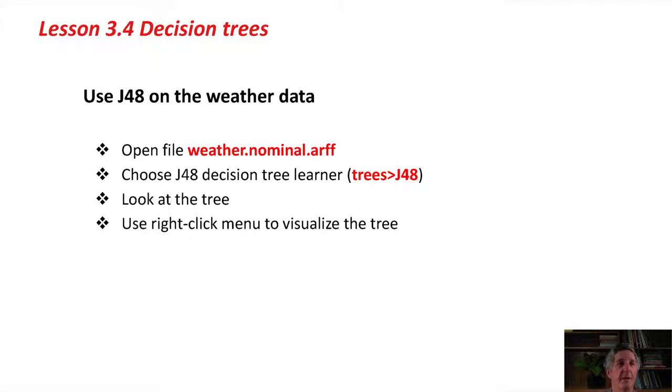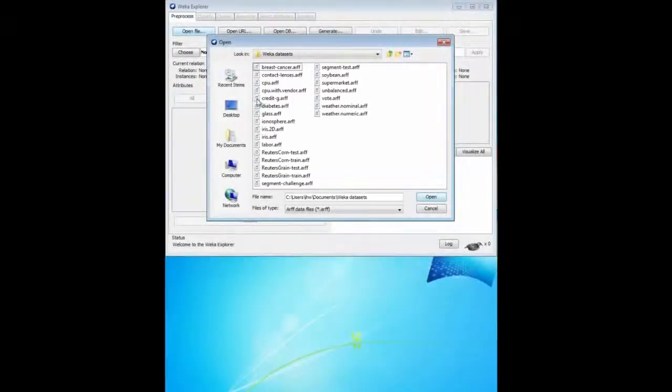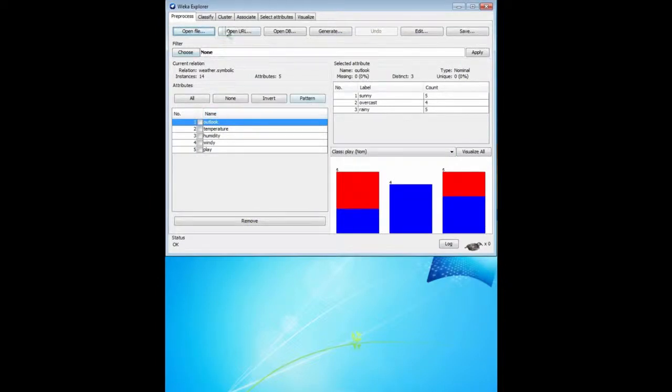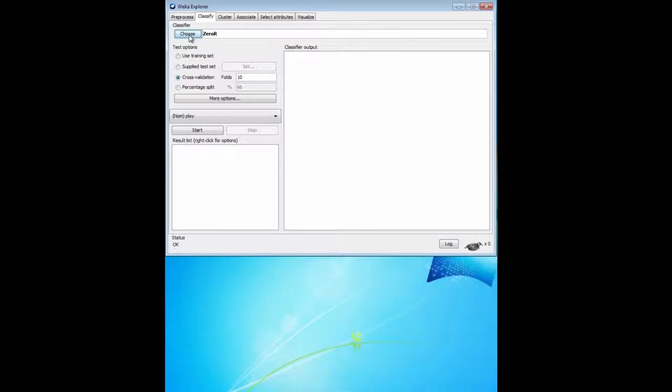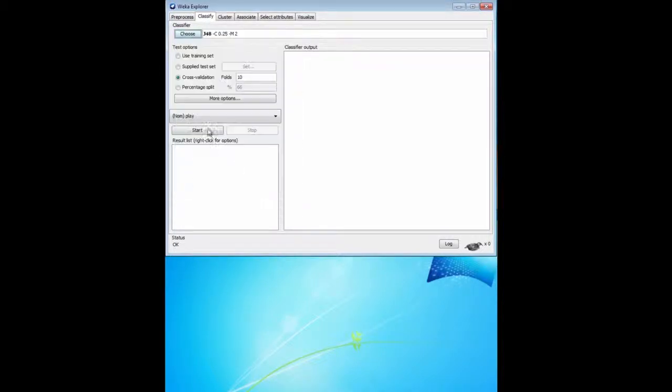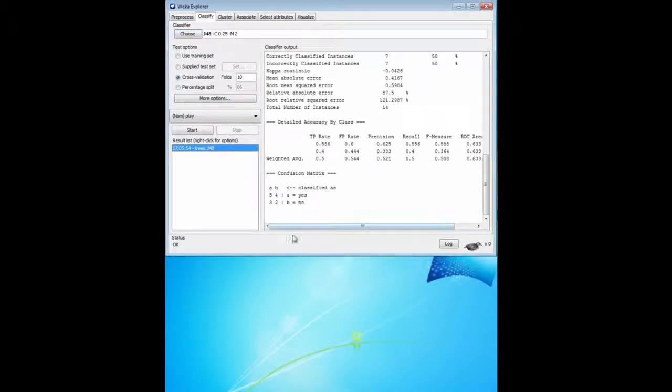Let's open up Weka and do this with the nominal weather data. Of course, we've done this before, but I'll just do it again. It won't take long. J48 is kind of the workhorse data mining algorithm. There's the data. We're going to choose J48. It's a tree classifier. There we go. We're going to run this.